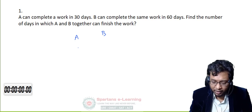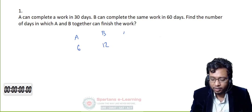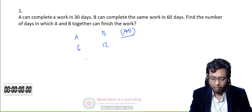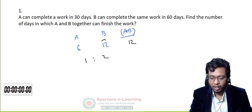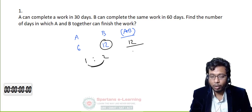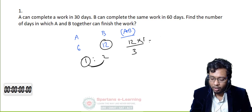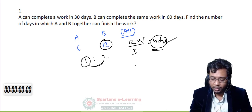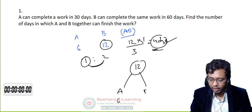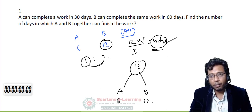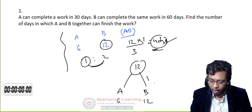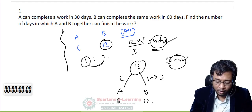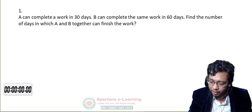For example: A can do a piece of work in 6 days, B can do it in 12 days. A plus B can do the same work in how many days? What is the ratio? 6:12 = 1:2. Pick the bigger number: 12. Divide by the sum of ratios (1+2=3), multiplied by the smaller ratio (1). So 12 × 1/3 = 4 days. With LCM method: total work = 12 units, A's efficiency = 2, B's efficiency = 1, total efficiency = 3, days = 12/3 = 4 days.